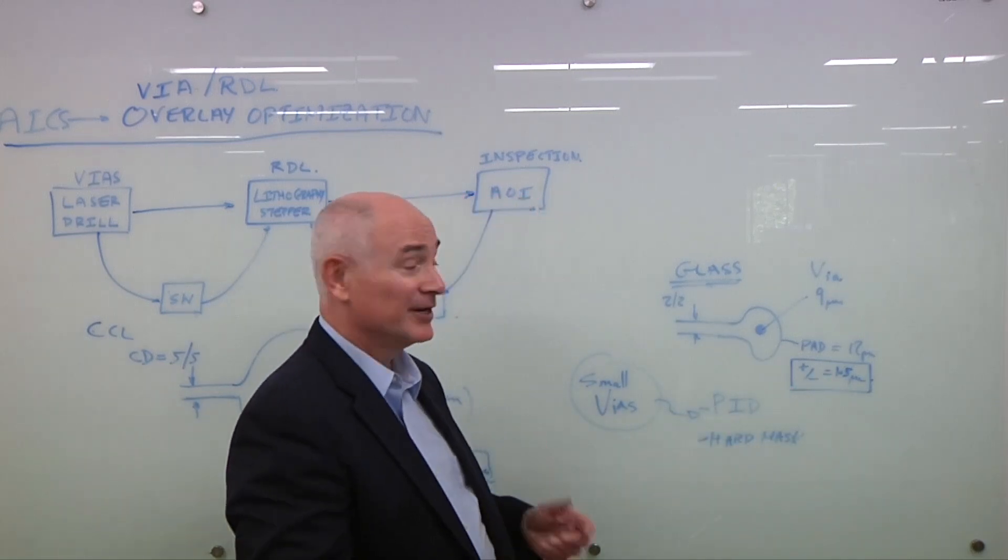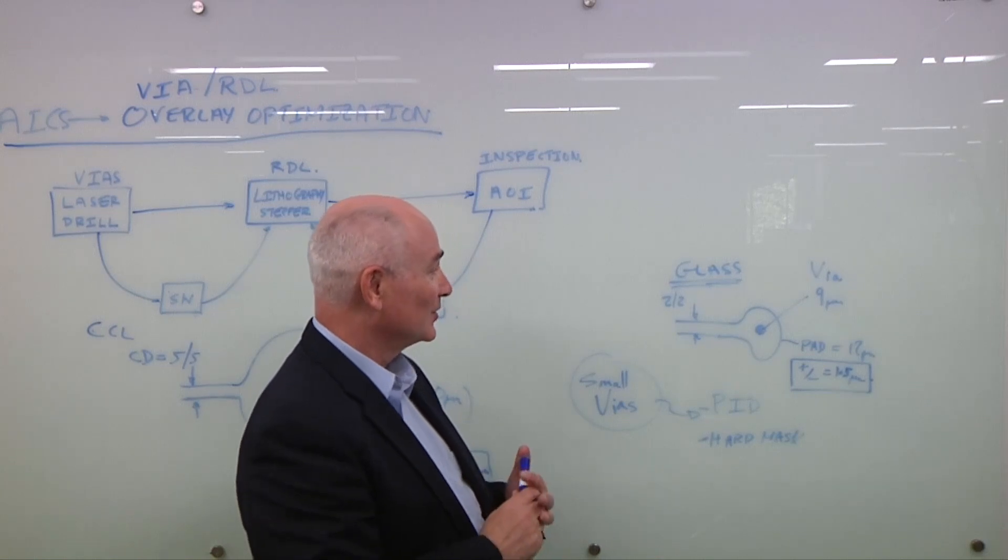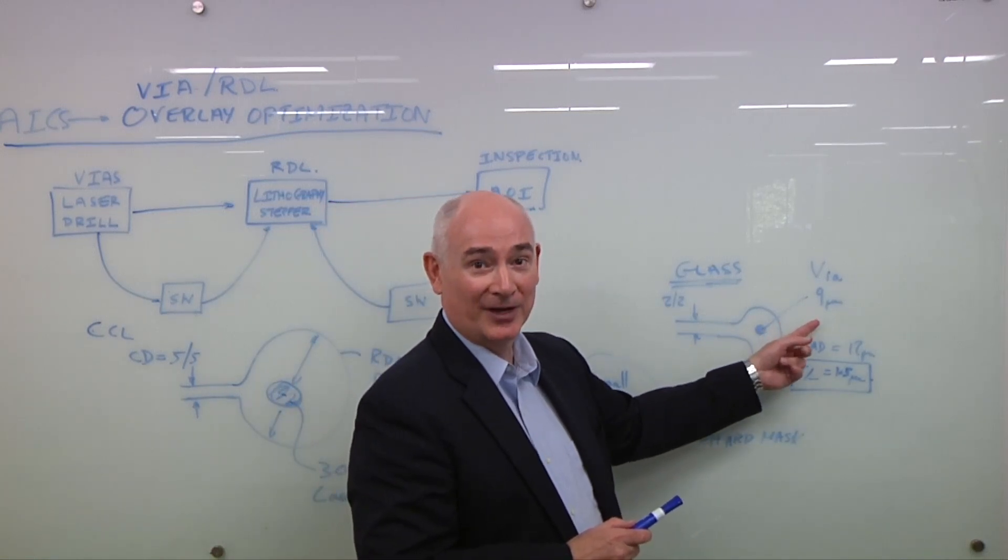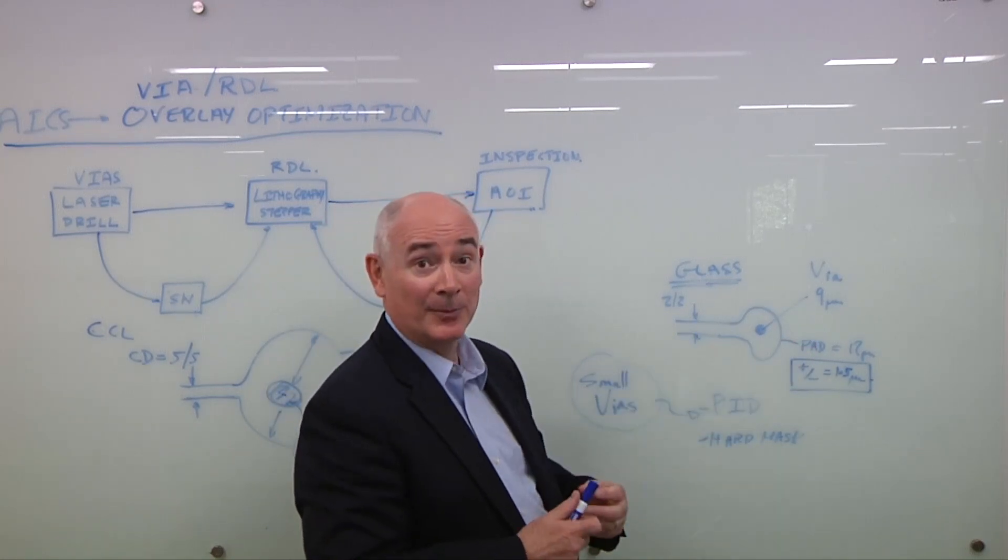But because it's glass, it won't move around as much. So this 1.5 microns is actually doable in production. One of the things that's quite interesting here, though, is the fact that you're now using a 9 micron via. You can't do 9 micron vias with laser drilling. You're going to have to move into a different approach, either using a photoimageable dielectric, like a polyimide, or some hard mask technique.